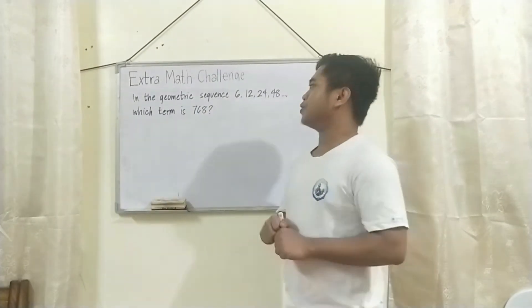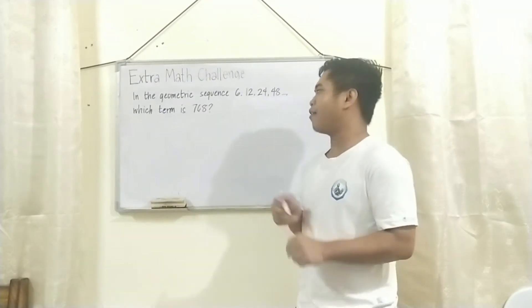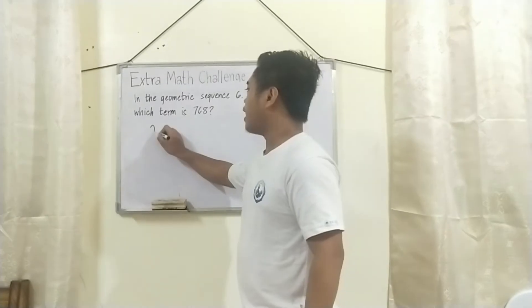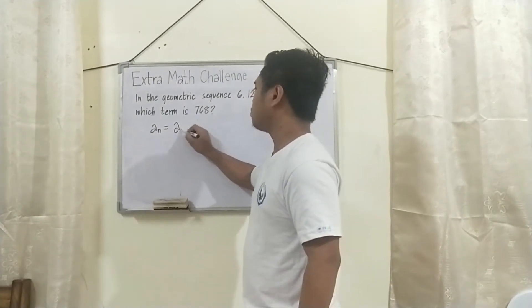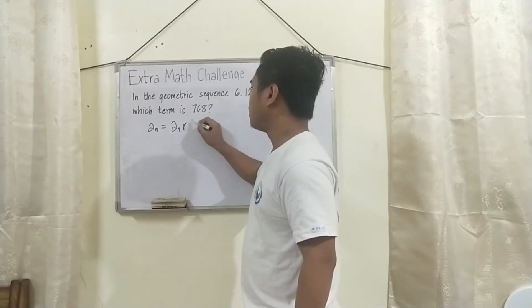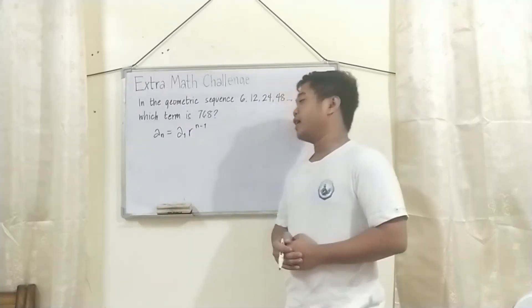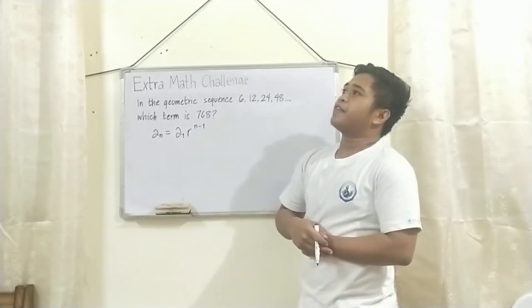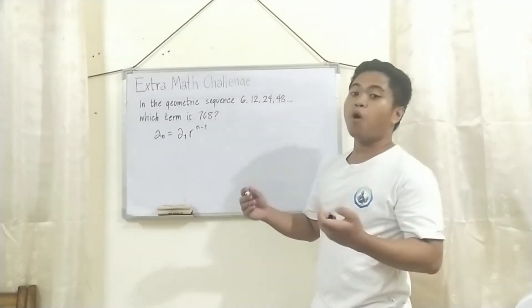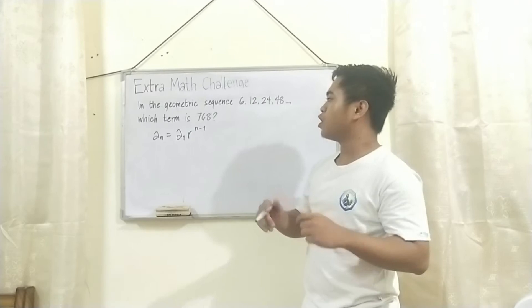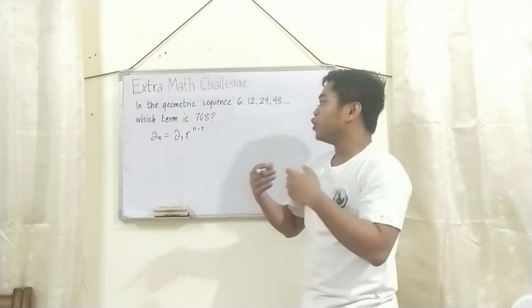Now, mga Habiters, sa pag-deal ng geometric sequence, we'll have this formula: A sub n is equal to A sub 1, R raised to n minus 1. Itong A sub n, that is the value of the nth term. Si A sub 1, yan yung first term. Yung R is yung common ratio, at yung n, yung term.